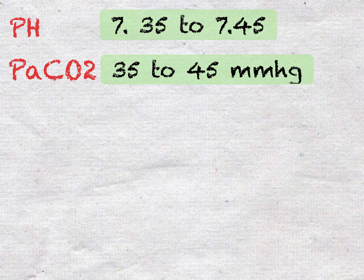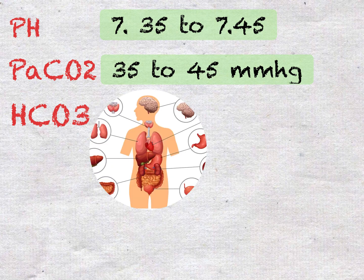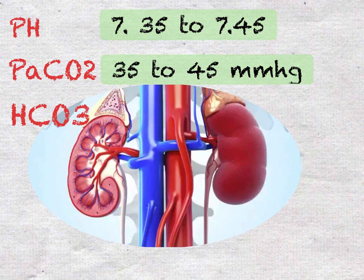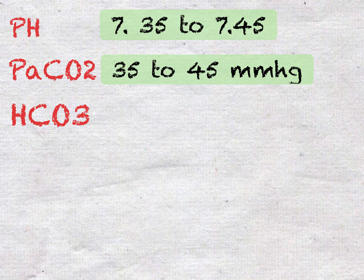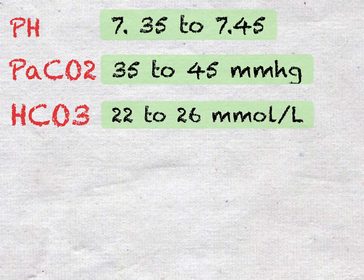The third value is the bicarbonate ions, or HCO3. This will tell you if the problem is related to metabolic changes in your patient and refers to the renal system. The normal value ranges from 22 to 26 mmol per liter. From these baseline values, you can begin to recognize the patient's problem if results fall outside these ranges.